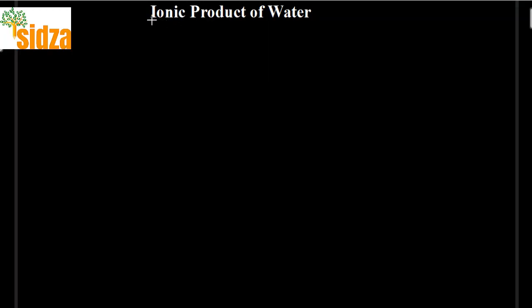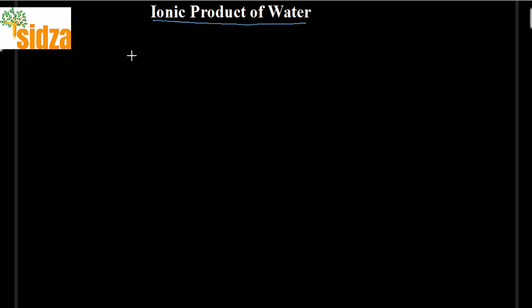Let's discuss the ionic product of water. Water is a poor conductor of electricity because water is a weak electrolyte — it dissociates to a very small extent. That's why water is a poor conductor of electricity, and we can represent this ionization of water.